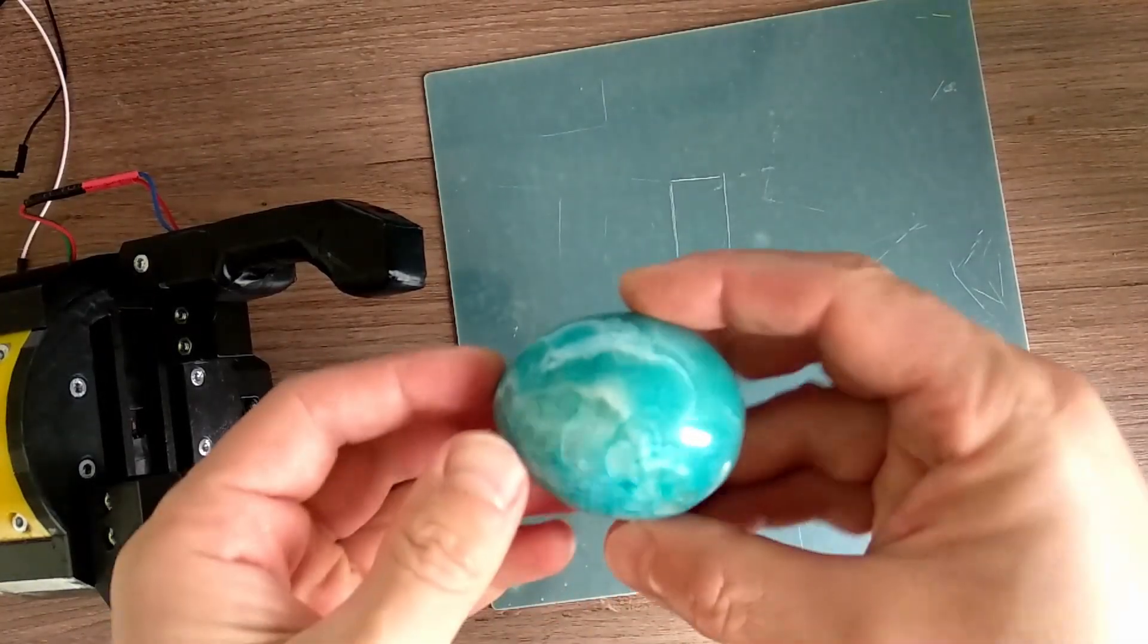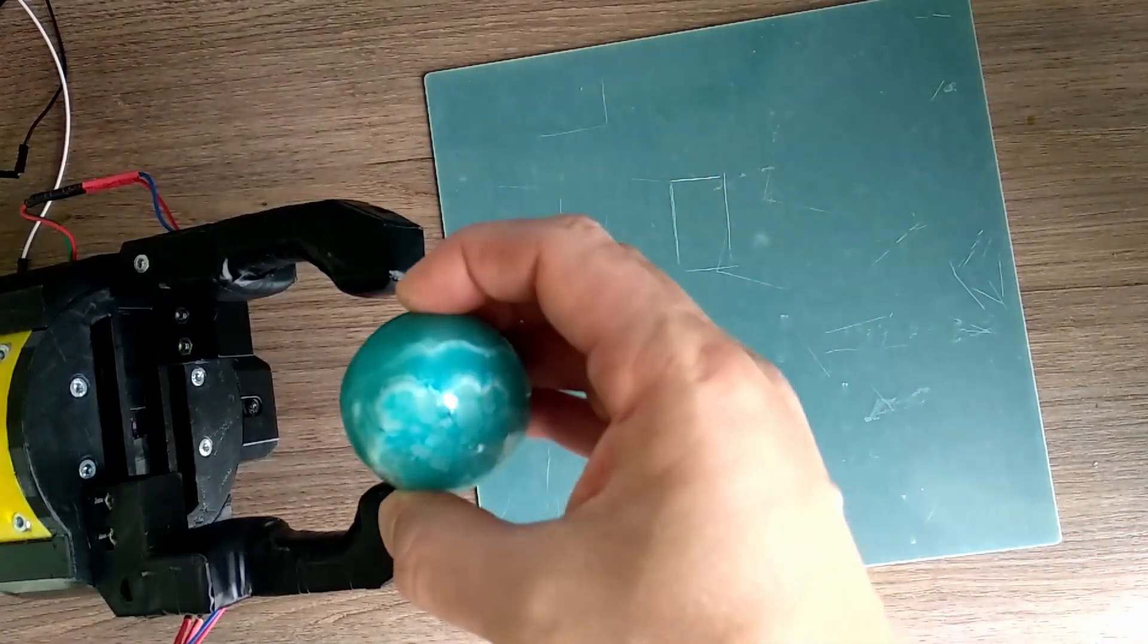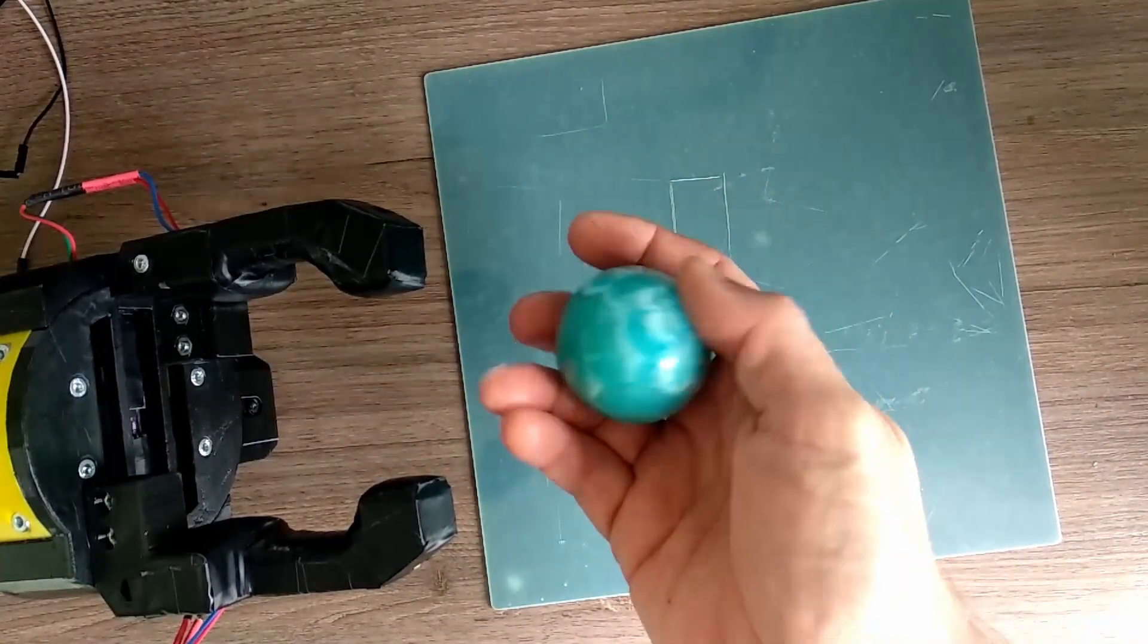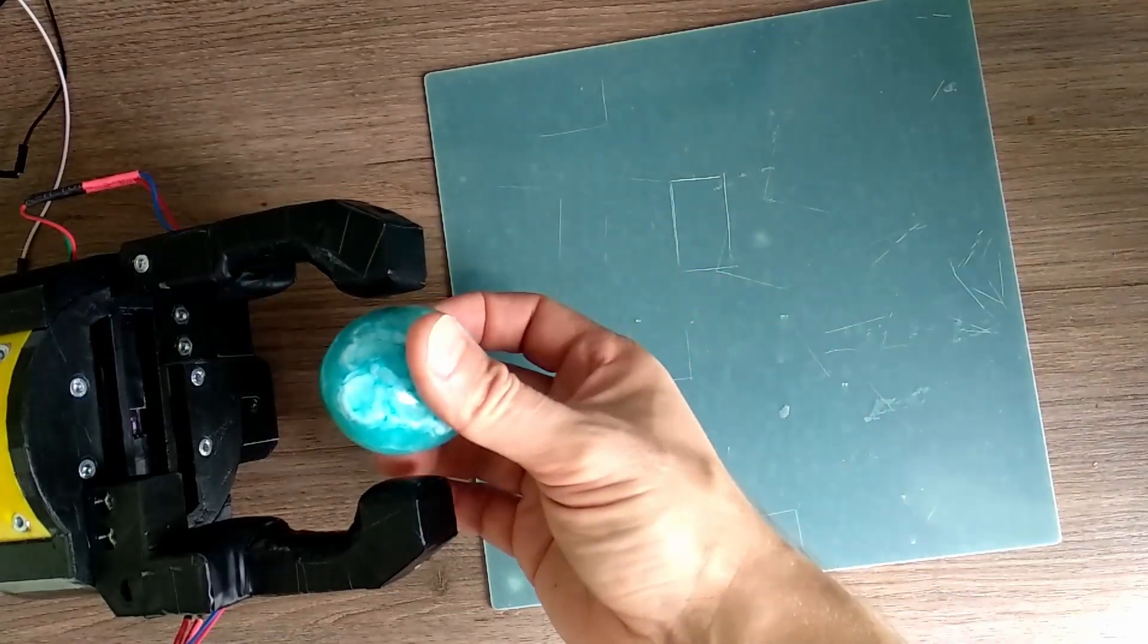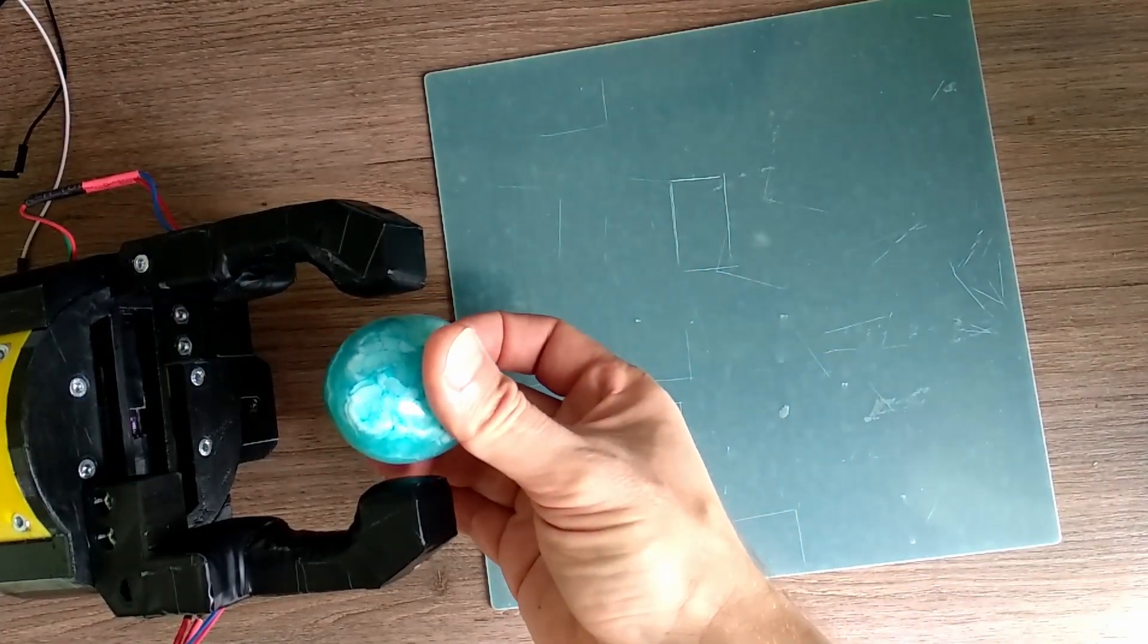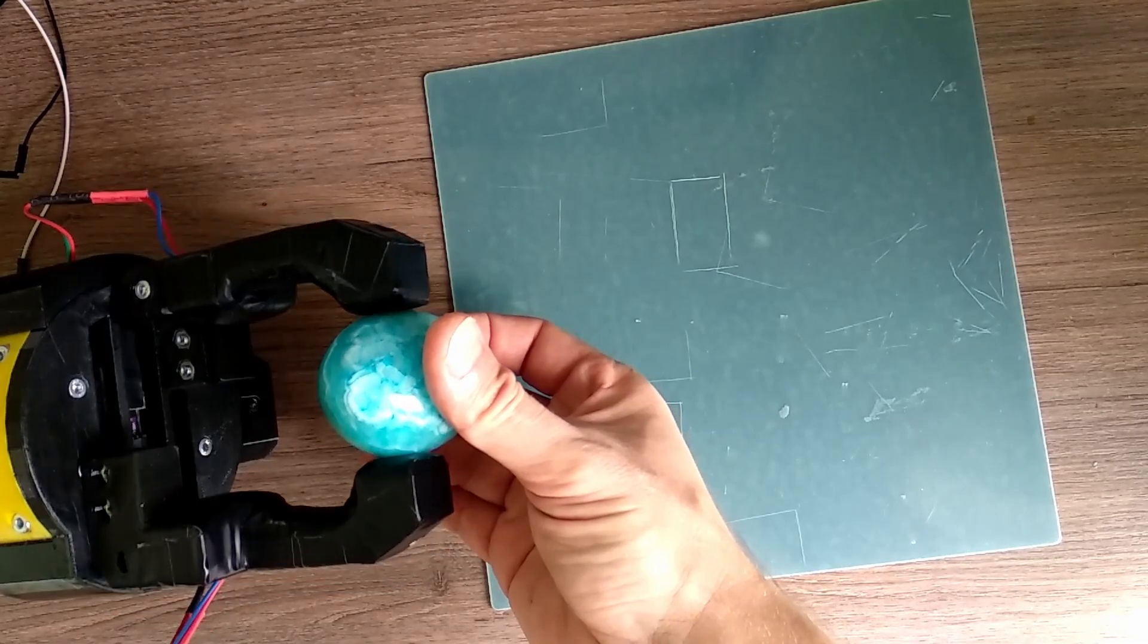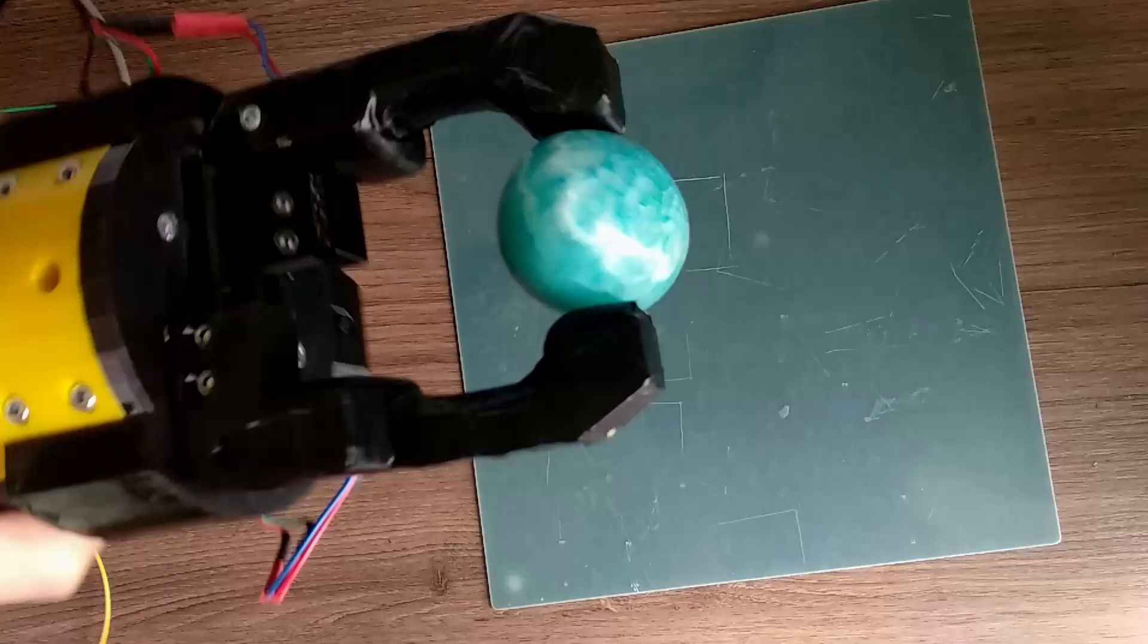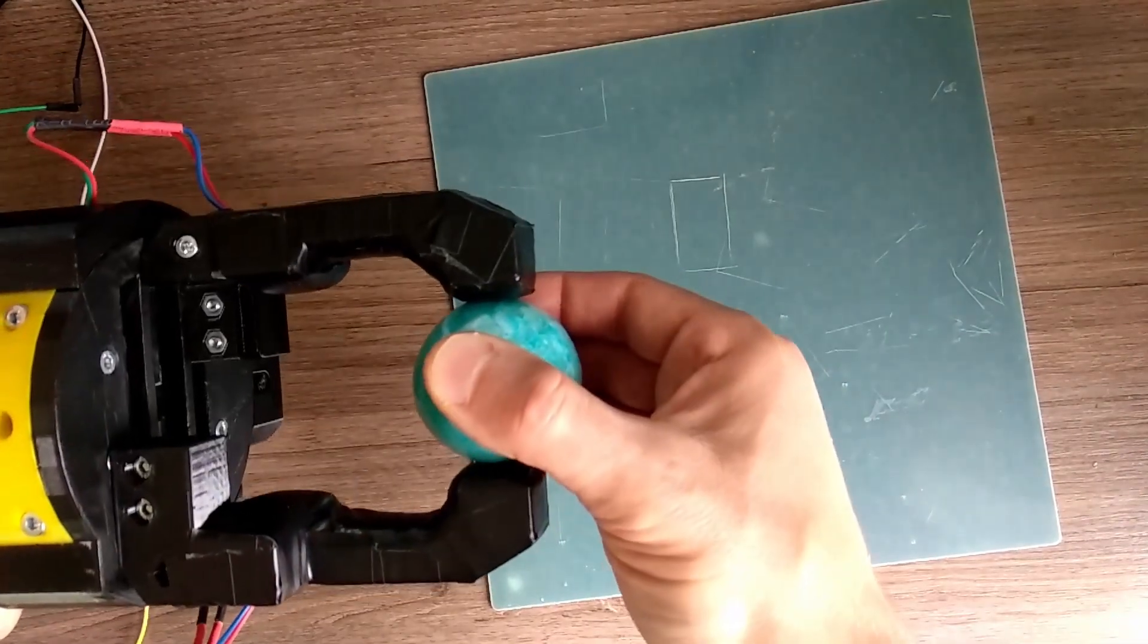This egg has polish slippery surface, let's try it. And it's quite heavy by the way. And as you can see it's not a big deal for the gripper.